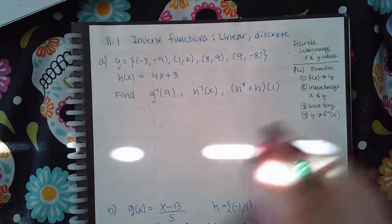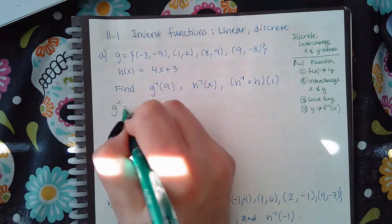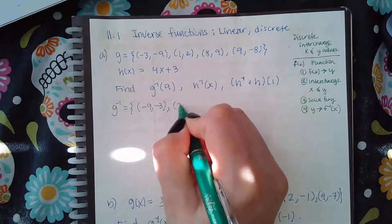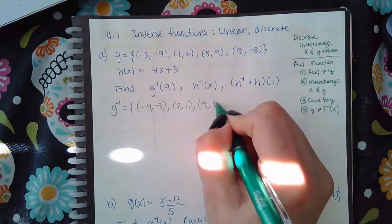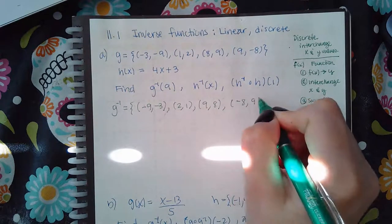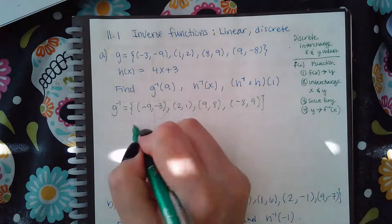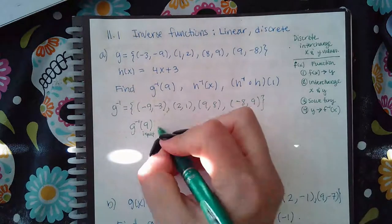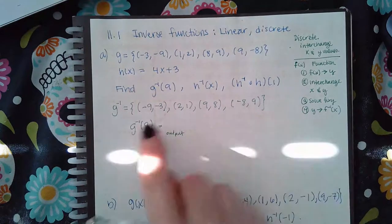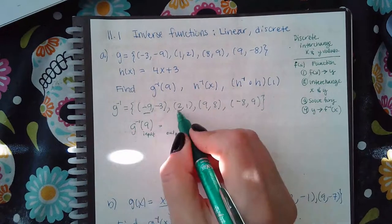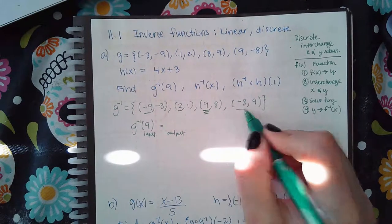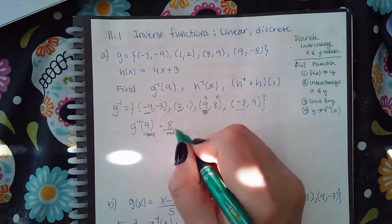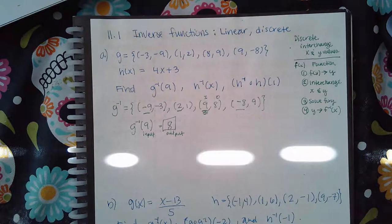If I take g, I can find the inverse just by interchanging all the x's and y's, so this becomes negative 9 negative 3, 2 and 1, 9 and 8, and negative 8 and 9. When they ask what is g inverse of 9, 9 is the input. Finding the input that equals 9, the output is the value 8 — so that's the answer.